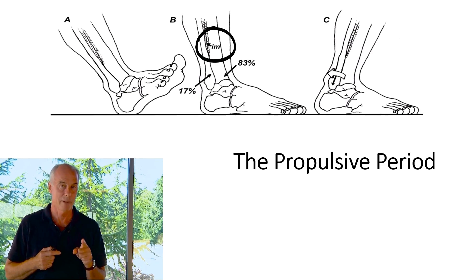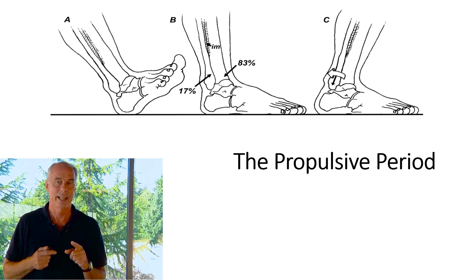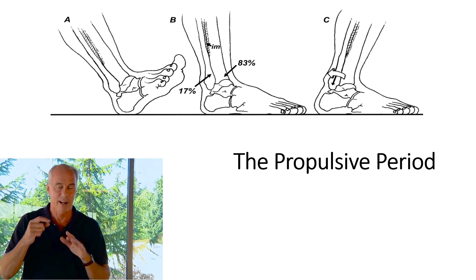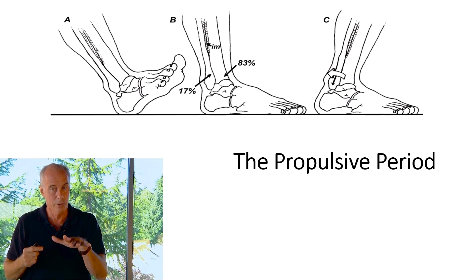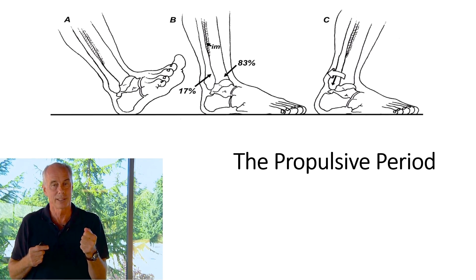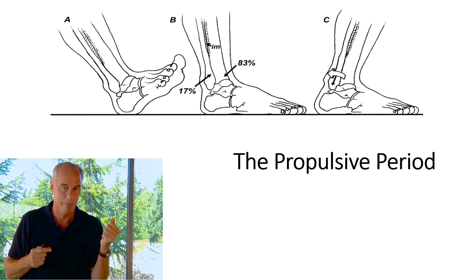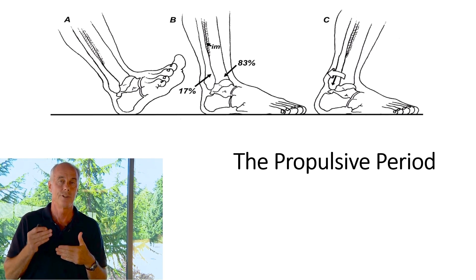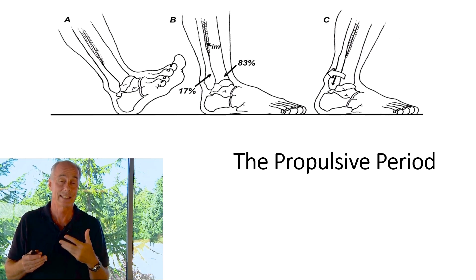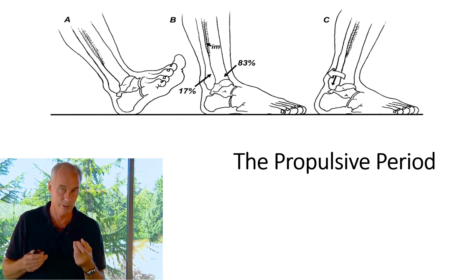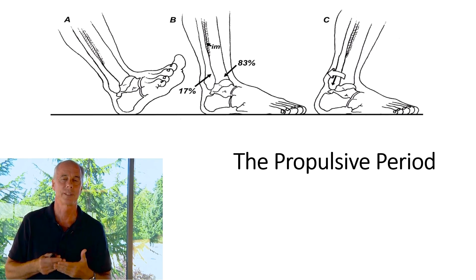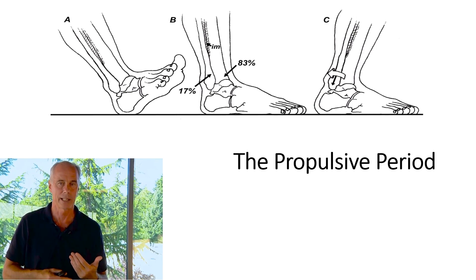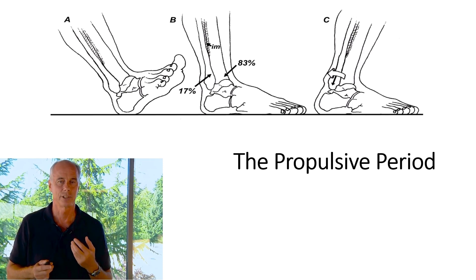During the propulsive period, flexor hallucis longus — which originates in the middle portion of the fibula — fires as force is transferred to the big toe. It pulls the fibula down, and in a study by Orant there is a measurable drop in movement of the fibula during push-off. This externally rotates and drops the fibula inferiorly, deepening the ankle mortise as forces are peaking. It lessens the potential for ankle sprain and helps stabilize the rearfoot during push-off.